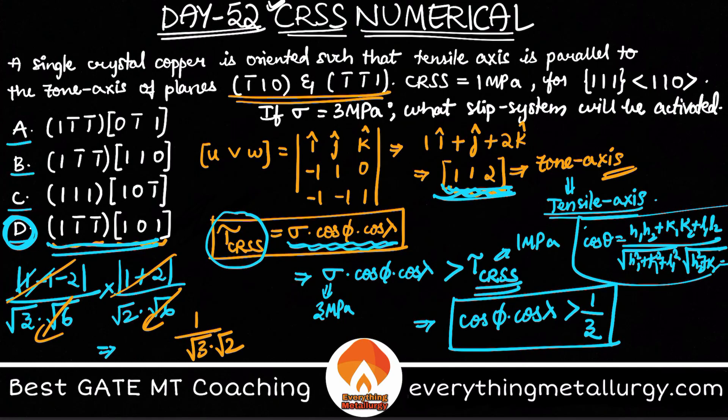We're left with 1 by root 3 into root 2. Let me quickly calculate: 1 divided by root 2 divided by root 3 equals 0.408.